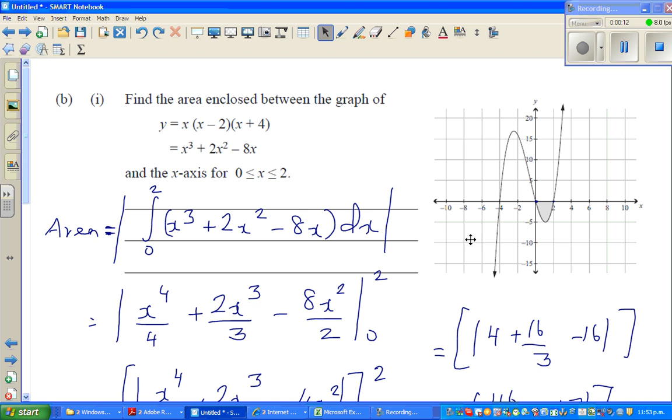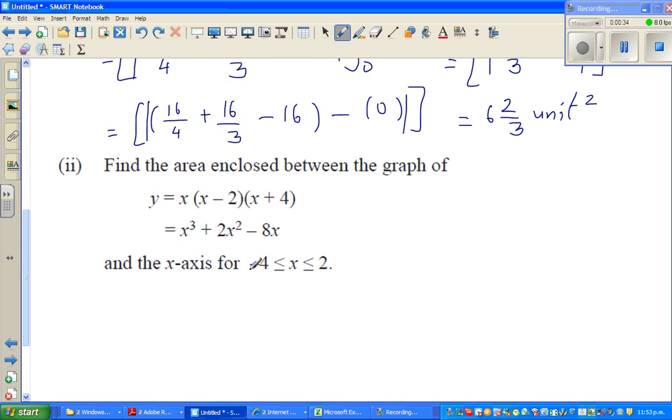This is the graph of the function. We found the area between 0 to 2 and you want to find now the area between minus 2 to 2. That means you have to first find this area. We have already found this area, so you have to find basically this area from minus 2 to 2 from the same function.